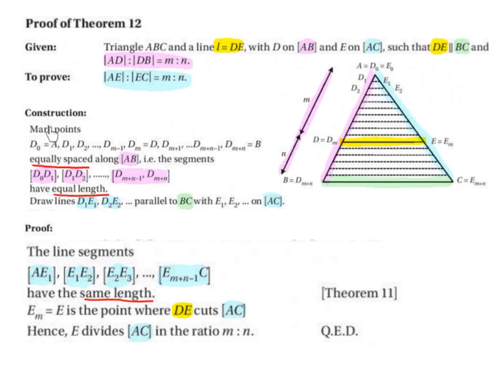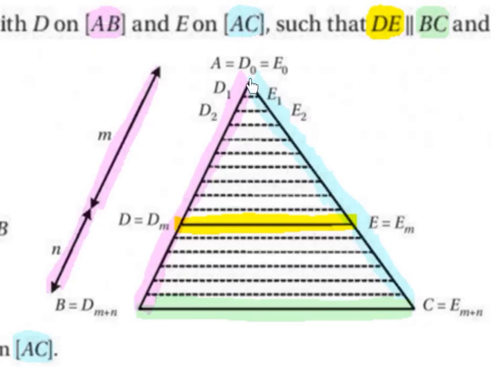Let's start with our construction. We want to mark some points on our diagram. We're going to let A equal to D0. This point A at the top of our triangle, remember a triangle is ABC, this point A is going to be also called D0. Then we're going to have D1, D2, D3, D4, D5 and so on. The point D belonging to the parallel line DE is now called DM, and the point B at the end of the triangle is now called the point DM plus N.